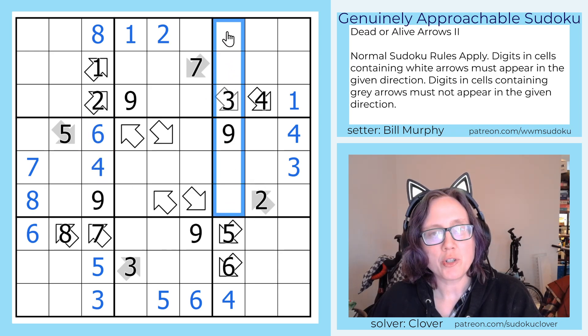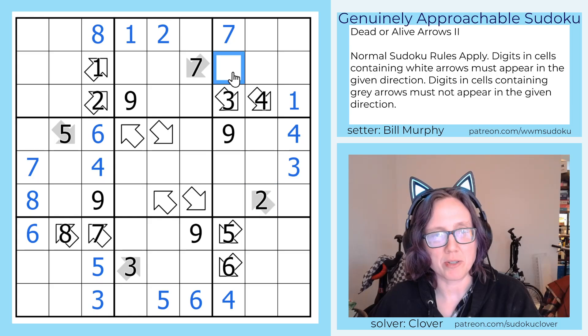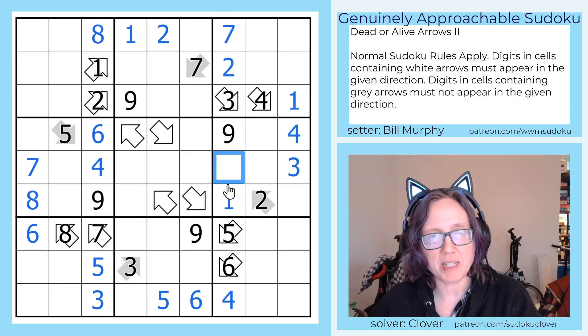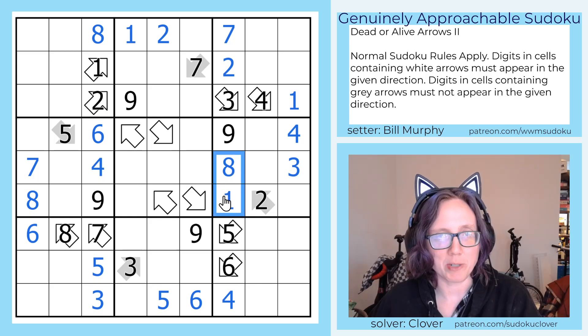In this column we need a 1, a 2, a 7, and an 8. We already have 1, 2, and 8 here, so this will be a 7. We can't have a 2 in these cells because of the 2 there, so that's our 2. And then the rest of the column is 1 and 8 because there's already an 8 in row 6. We can go ahead and tell which way around those have to go.